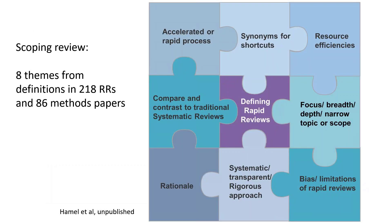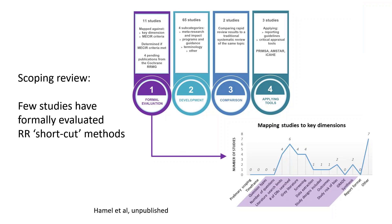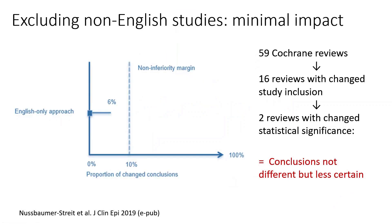From the first scoping review on rapid review definitions, eight themes emerged from the literature, and input to develop a potential Cochrane definition is underway. The second scoping review showed there were very few studies looking at specific shortcuts to inform decision-making for rapid review methods, and we mapped these to key dimensions in the rapid review process. One methods project, now published in the Journal of Clinical Epidemiology, showed that when taking a sample of Cochrane reviews and excluding non-English studies, it had very minimal impact on conclusions, anchoring the relevance to conventional medical intervention topics.